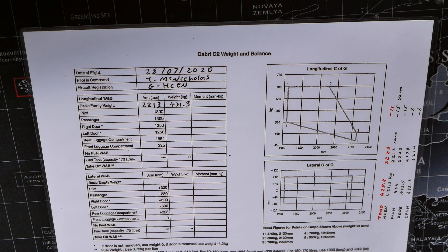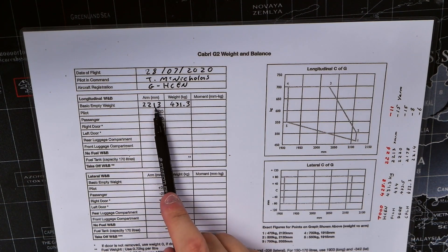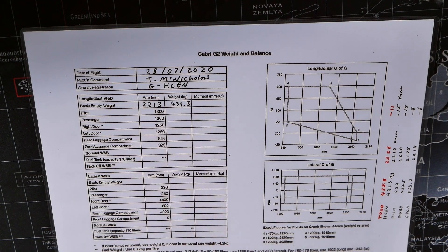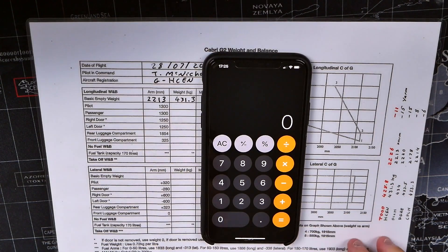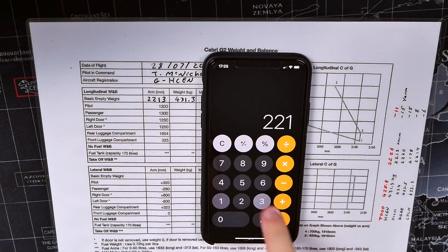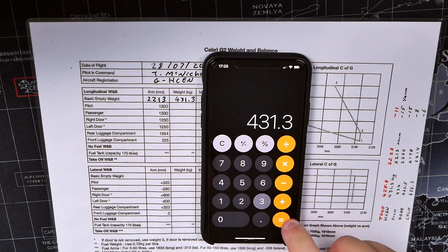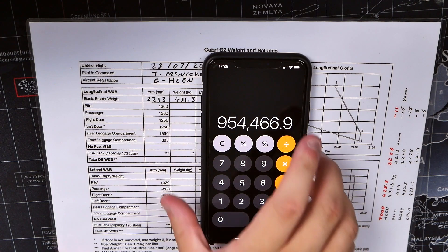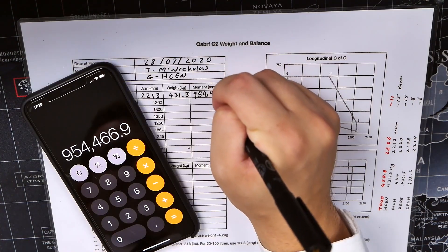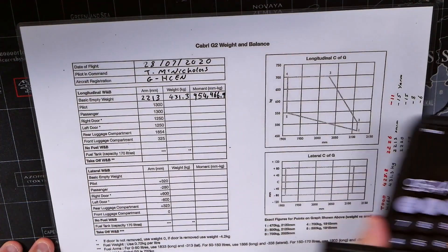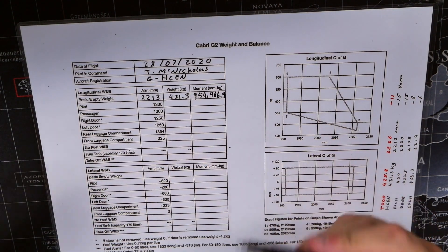Going back to some basic physics, the moment of an object is the force applied to it times the distance. So the force times the distance gives us our moment. If we pull out our calculator, we do 2213 times 431.3, and that gives us that value there, 6.9.